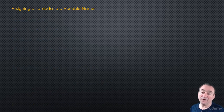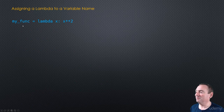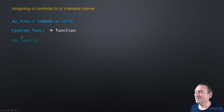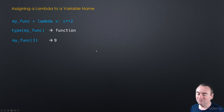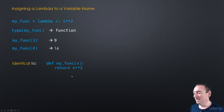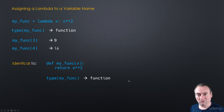So what can we do with a lambda? We can assign it to a variable name. We could say 'my_func = lambda x: x**2'. This is an expression that returns a function, and we can assign it to a variable. Now my_func is of type function — if we call type(my_func) we'll get function. We can call it: my_func(3) gives us 9, my_func(4) gives us 16. This is identical to writing 'def my_func(x): return x**2'. If you check type(my_func), you'll also get function, and my_func(3) is 9 and my_func(4) is 16.